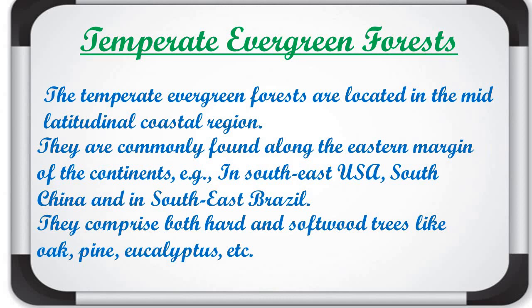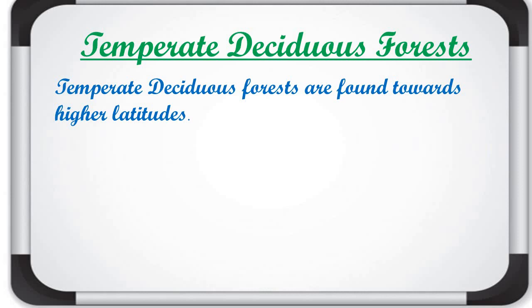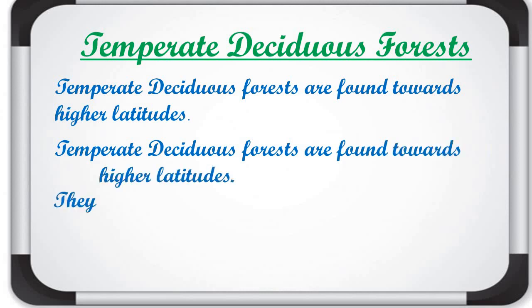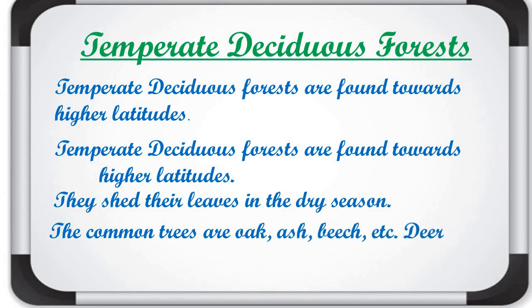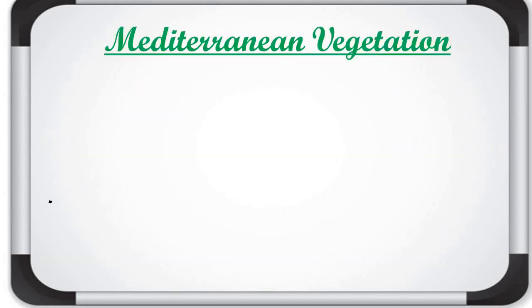Temperate deciduous forests are found towards higher latitudes. They shed their leaves in the dry season. Common trees are oak, ash, and beech. Animals found in this forest include deer, foxes, and wolves.